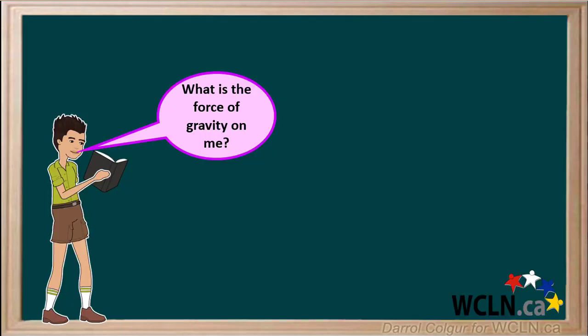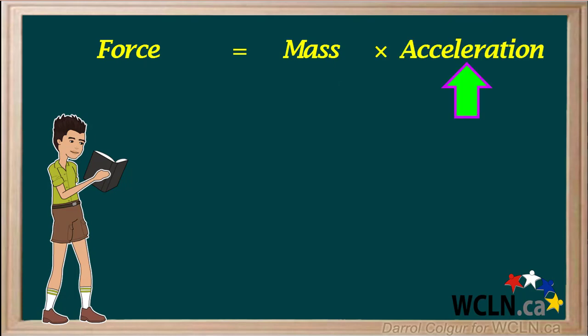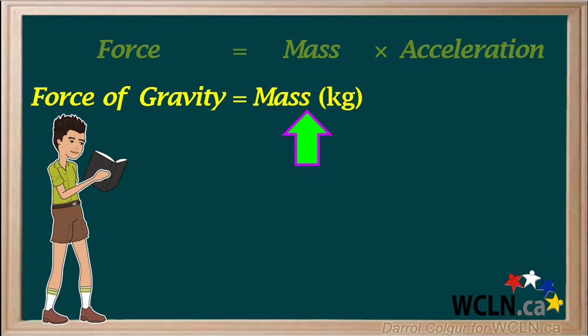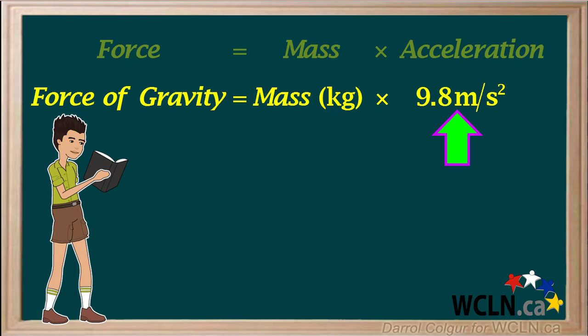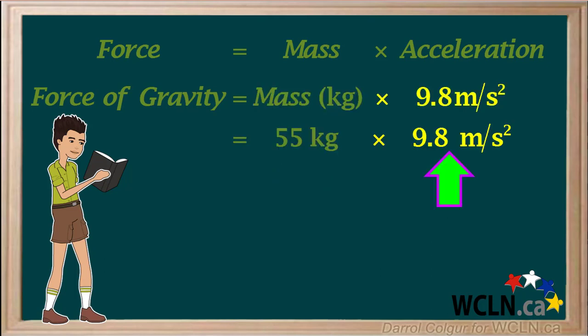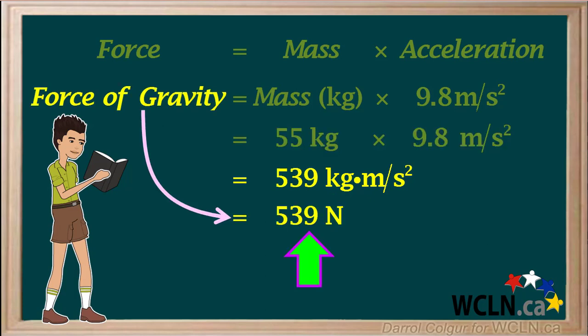So how do we find the force of gravity acting on the boy? To calculate a force, we use a simple equation: Force equals mass times acceleration. To calculate the force of gravity on an object on Earth's surface, we use: force of gravity equals mass in kilograms times the acceleration of gravity on Earth, which is 9.8 meters per second squared. The mass of the boy is 55 kg, multiplied by 9.8 meters per second squared, gives us 539 kg·m/s², or 539 newtons.